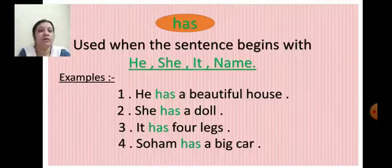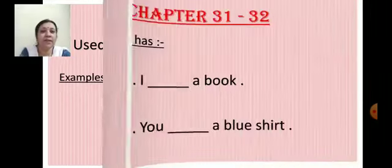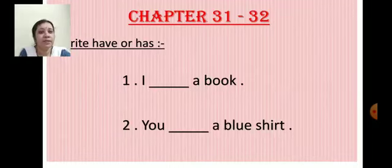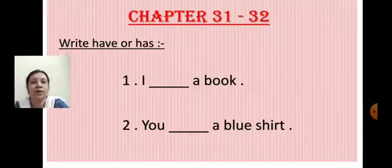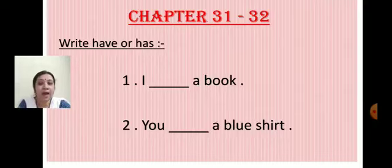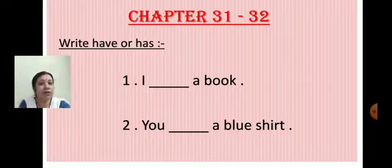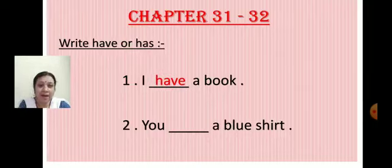Now take out your active English textbook, chapter number 31 and 32. Here we have to write have or has. See the first one: I dash a book. The sentence begins with I, so we write have. I have a book.